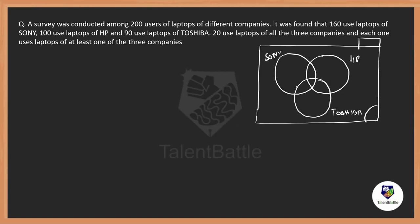Instead of the standard n(A∪B∪C) approach which takes a long time, I'll show you a shortcut. The three circles intersect, forming seven parts. I'll label them using seven alphabets: the three outer-only regions are A, B, C; the three pairwise intersection regions are D, E, F; and the intersection of all three at one point is G. This representation will be used throughout.